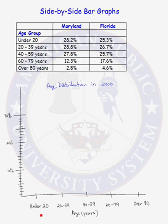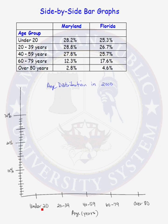We have our five age categories on the x-axis: under 20, 20–39, 40–59, 60–79, and over 80, with our axis labeled with age in years. We have our y-axis labeled in percents. For the under-20 age group, we are going to graph Maryland, and right beside it we will graph the Florida percentage, so that we will see the percentages side by side.